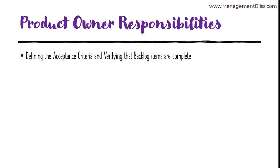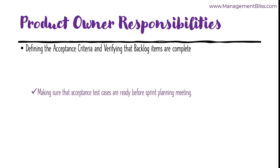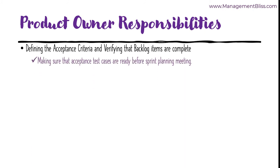Another responsibility is Defining the Acceptance Criteria and verifying that the Product Backlog item is complete. Acceptance Criteria are the conditions that should be satisfied before saying that a user story is done. The Product Owner might write the acceptance test cases on his own or may ask the team to do so under his guidance. A Product Owner also confirms if a Product Backlog item is complete during a Sprint Review.